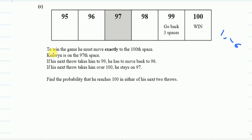So let's read. To win the game he must move exactly to the 100th space. We all know if you are at 100 you will win the game. Kenwin is on the 97th space. So he is right here at the moment. If his next route takes him to 99 he has to move back to 96. So if I reach here I will go automatically to 96.